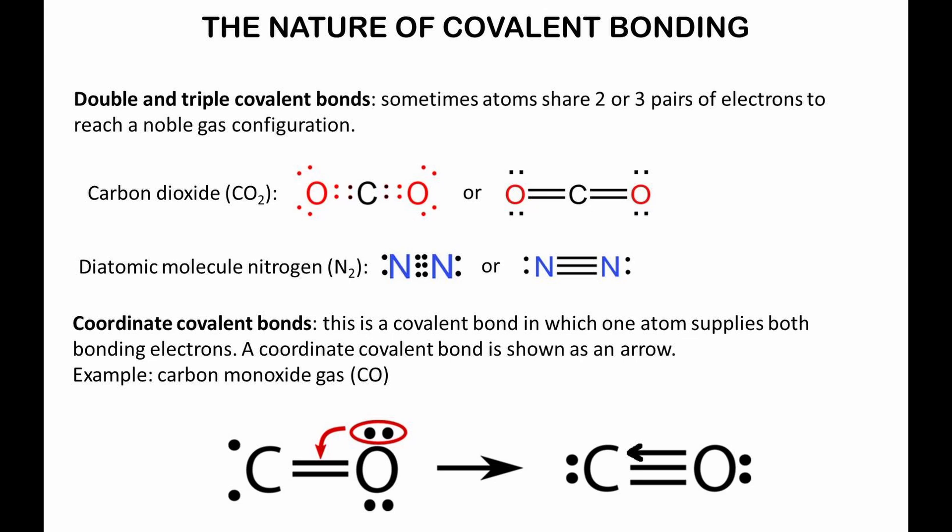Sometimes atoms share two or three pairs of electrons to reach a noble gas configuration. Carbon dioxide has two double covalent bonds, while the diatomic molecule nitrogen has a triple covalent bond.